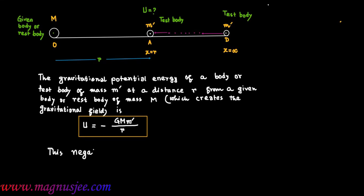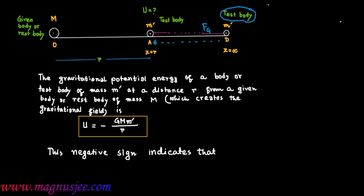This negative sign in the expression of U — that means in the expression of gravitational potential energy — indicates that the body will move from point D to point A under the action of attractive gravitational force FG.